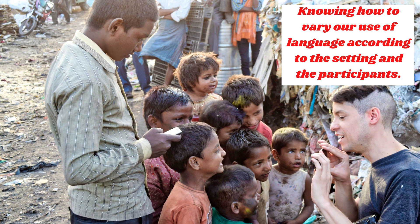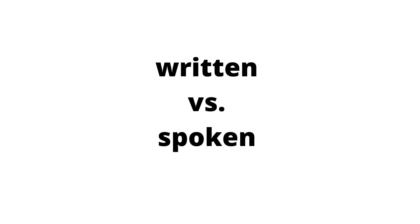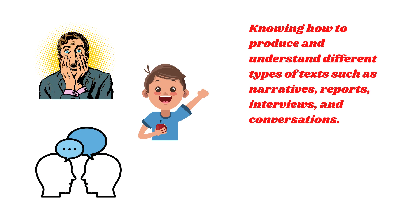It also involves knowing how to vary our use of language according to the setting and the participants — for example, knowing when to use formal and informal speech, or when to use language appropriately for written as opposed to spoken communication — and knowing how to produce and understand different types of texts such as narratives, reports, interviews, and conversations. The way these different types of texts are produced may be different from the way they are done in English and other languages.